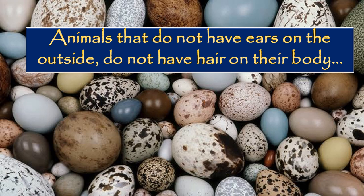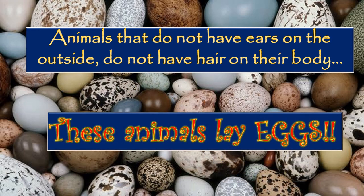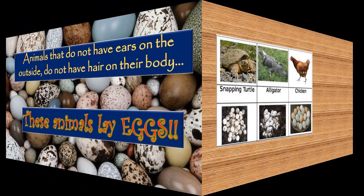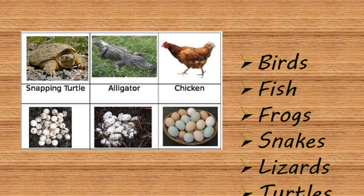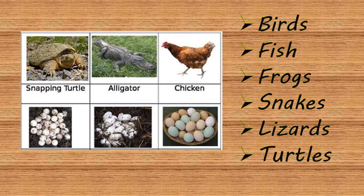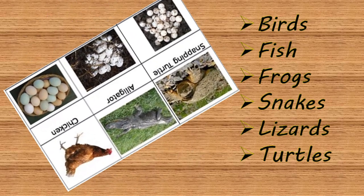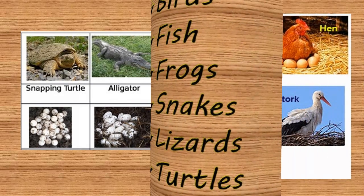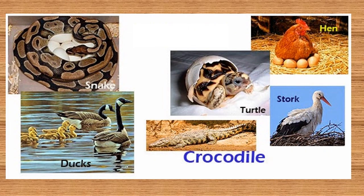Animals that do not have ears on the outside and do not have hair on their skin lay eggs. Animals like birds, fish, and frogs do not have hair on their skin and neither can we see their ears on the outside of their body. These animals lay eggs and are called oviparous animals.